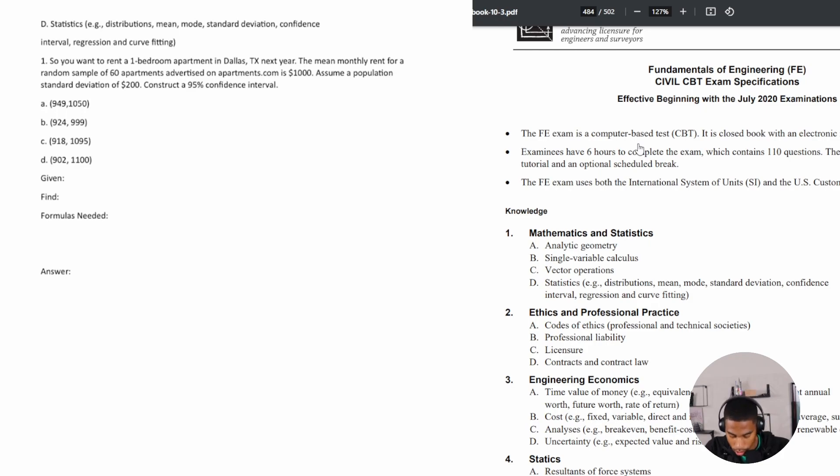You want to rent a one bedroom apartment in Dallas, Texas next year. The mean monthly rent for a random sample of 60 apartments advertised on apartments.com is $1000. Assume a population standard deviation of $200. Construct a 95% confidence interval.